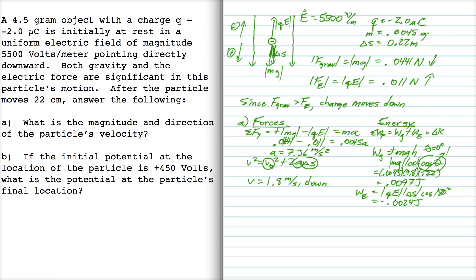Okay, so the total work is 0.0070, and that's equal to one-half Mv squared minus zero. Of course, the initial kinetic energy is zero, so V0 is zero.